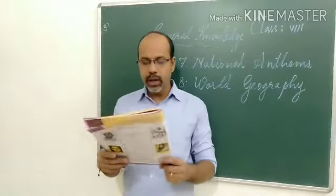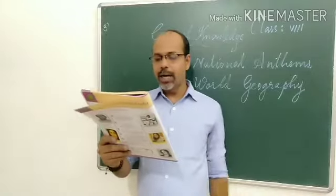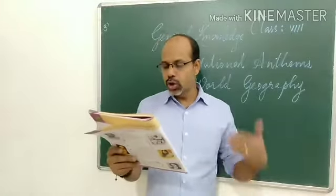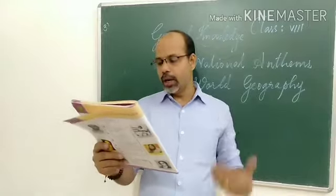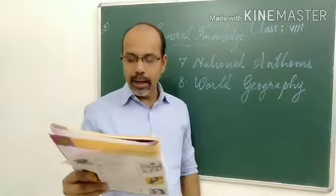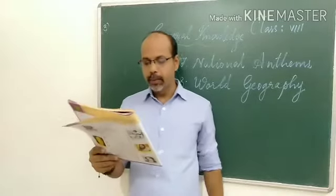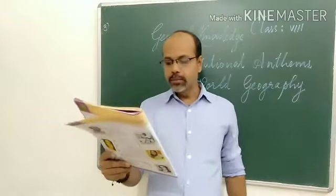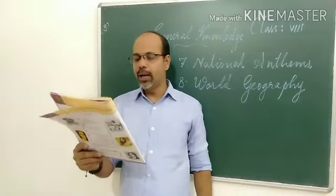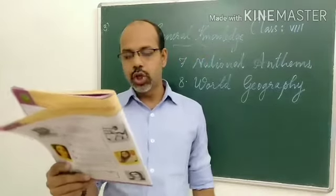Then comes the sixth one, Deutschlandlied. Deutschlandlied belongs to Germany — that is the national anthem of Germany. Then comes the seventh one, Inno di Mameli. Inno di Mameli belongs to Italy.